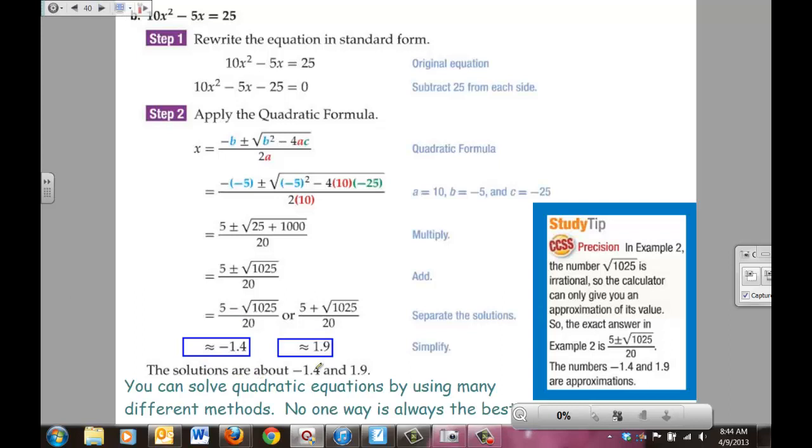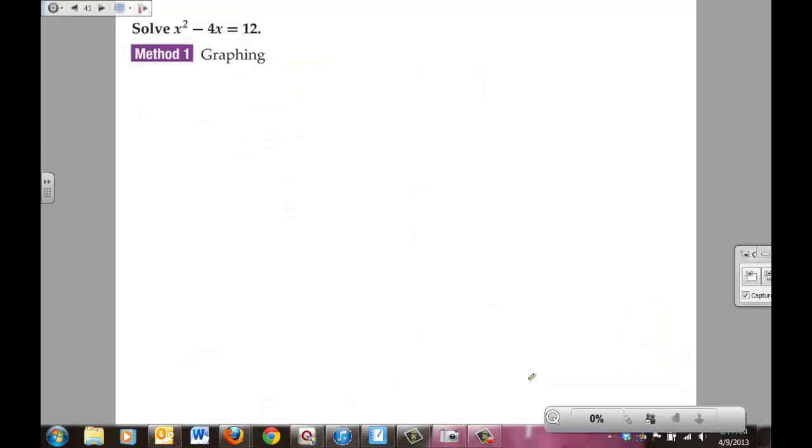You can solve the quadratic equation by using many different methods. No one way is best, it says. Here's another one. Let's try it. You've got the original problem x² - 4x = 12. We're going to place it in standard form by subtracting the 12 from both sides. Take your original equation, subtract the 12, and now we have it in standard form.